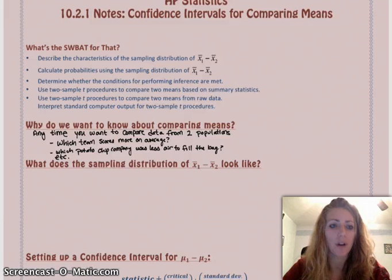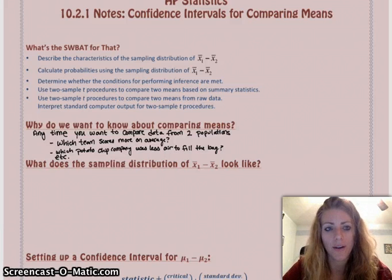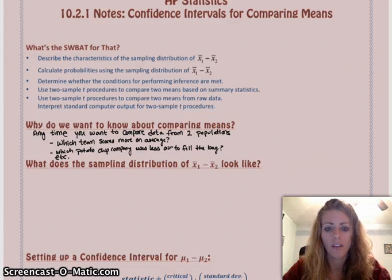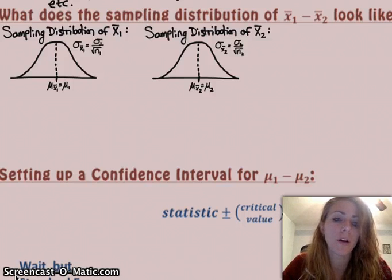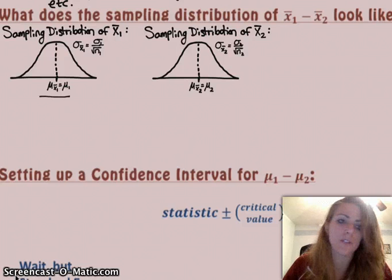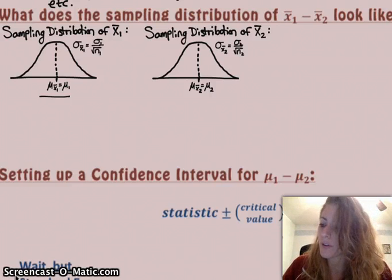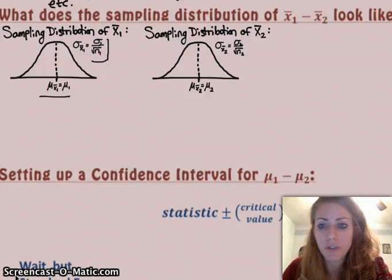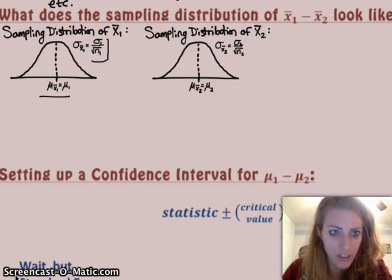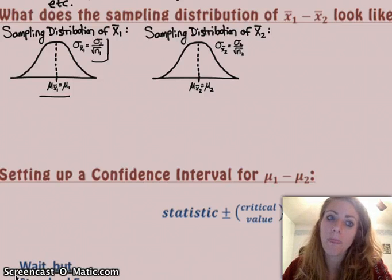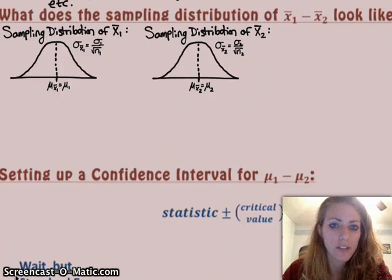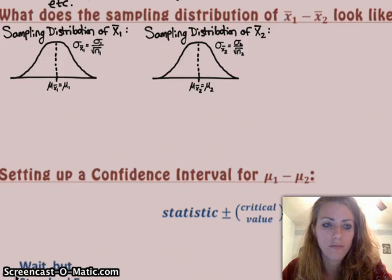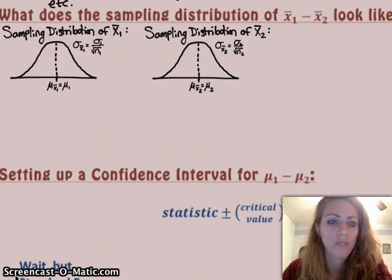So, comparing data, we tend to do that a lot. All right, what does the sampling distribution of x̄₁ minus x̄₂ look like? Well, same scenario as we had with the proportions. You're taking two different distributions. So, the sampling distribution of x̄₁ has the mean of the true population, the first true population, and the standard deviation of the population over the square root of whatever my sample size is, right? So, same thing for x̄₂, except it's the mean of the second population and the standard deviation of the second population. Now, in the case where you don't have sigma, you have to use the standard error, which is s of x₁ over square root of n₁ and s of x₂ over the square root of n₂.